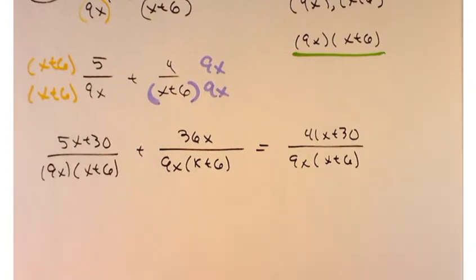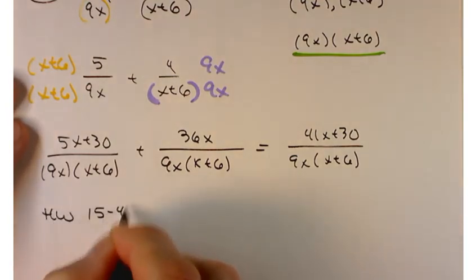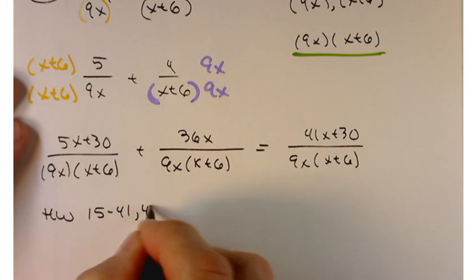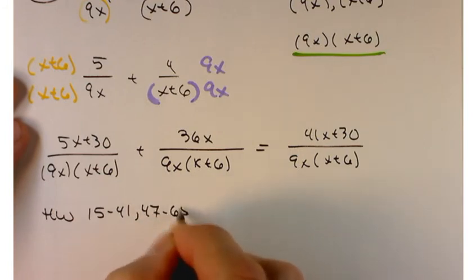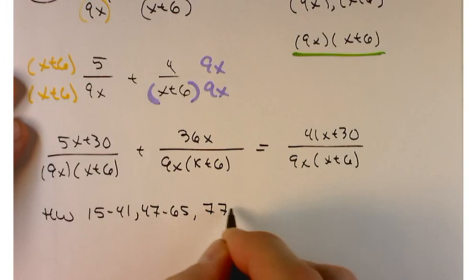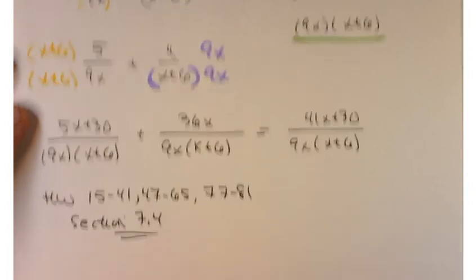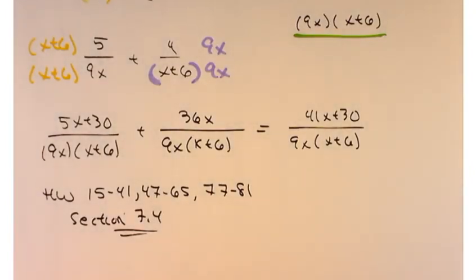For homework in this section, try problems 15 through 41, 47 through 65, and 77 through 81. That's section 7.4. Good luck, have a safe and happy Thanksgiving, and go blue — beat the Buckeyes.